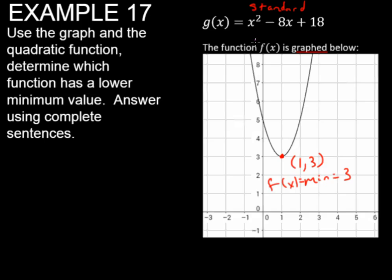Now we need to find g of x's, so we're going to label ax squared minus bx plus c, and we use x equals negative b over 2a. We know that b is negative 8, so I have negative 8 over 2 times a, which is 1.